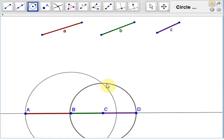Now, because of the triangle inequality, these two circles are guaranteed to intersect. Choose a point of intersection, we'll call that E.